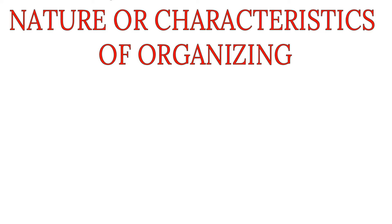Moving on to the next topic, that is the nature and characteristics of organizing. From the study of various definitions given by different management experts, we get the following information about the characteristics or nature of organization. The first is division of work. Division of work is the basis of an organization — in other words, there can be no organization without division of work. Under division of work, the entire work of business is divided into many departments.